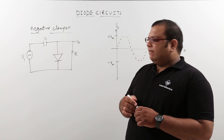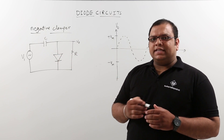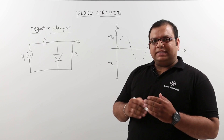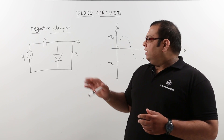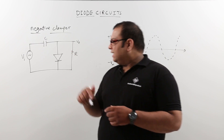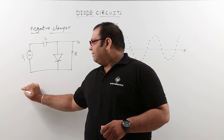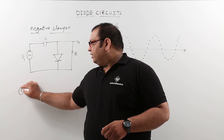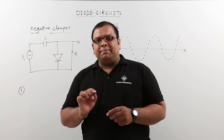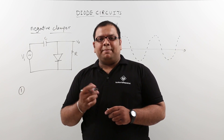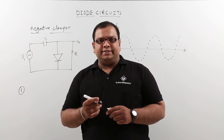When analyzing this circuit, we follow the same procedure as discussed earlier. The first step when analyzing a clamper circuit is to see what is the maximum voltage the capacitor is going to charge to.